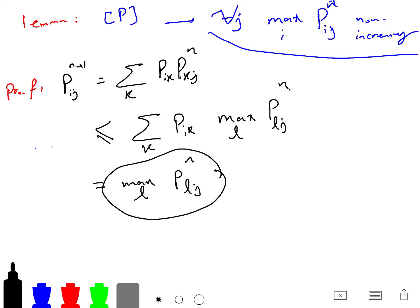And we know that it cannot increase. We're just multiplying something, and it will not be more than this. And it holds for any state, for all states. And it holds for maximizing i. So maximum of pij to the n plus 1 is less than or equal to maximum of plj to the n, overall l.